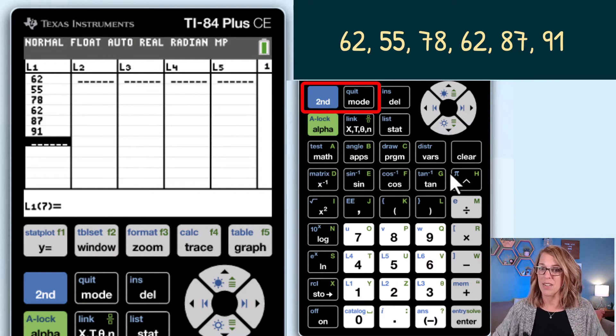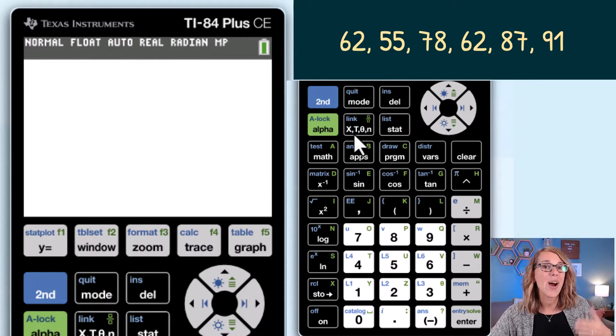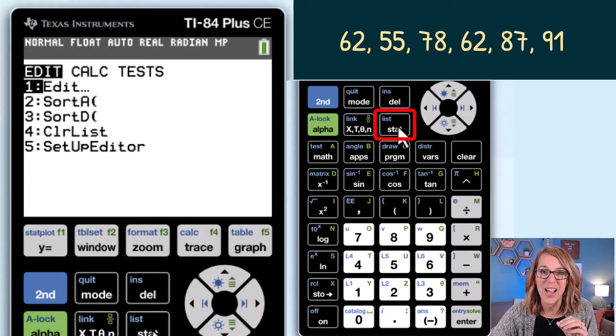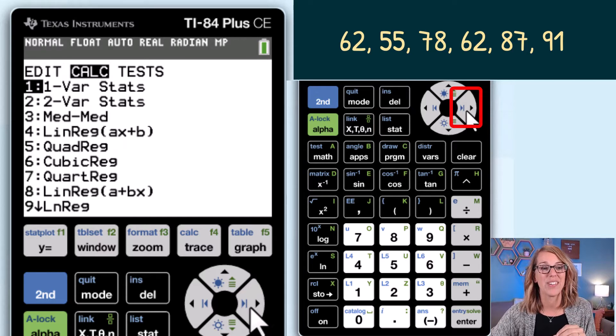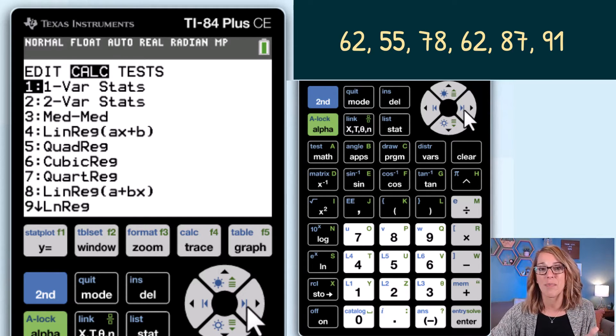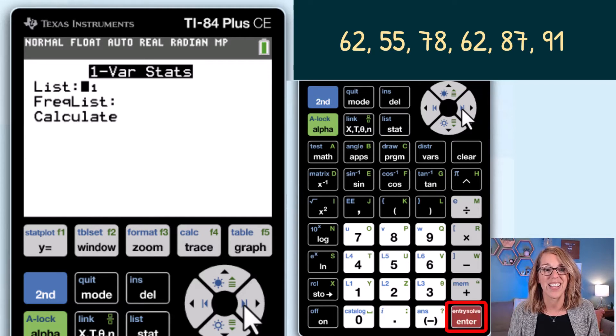I'm going to exit here by clicking second followed by quit. Now I'm going to run one variable stats. I click on the stat menu. I'm going to arrow over to choose the calc menu and I do want one variable stats which is my very first choice. So let's click on enter.